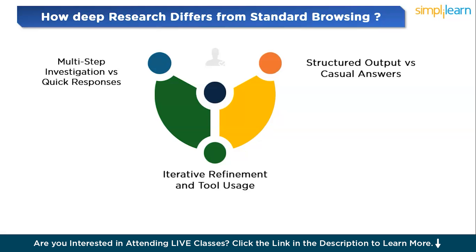These parameters show us that Deep Research is designed for complex, research-heavy tasks that require in-depth analysis and cross-referencing of data, whereas ChatGPT browsing is more suited for quick answers and general queries.